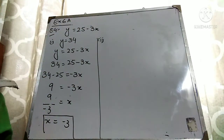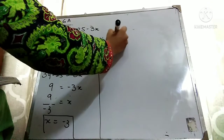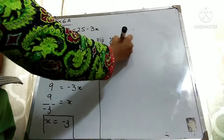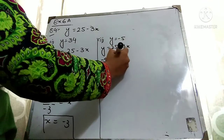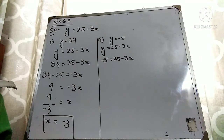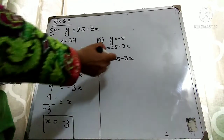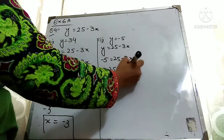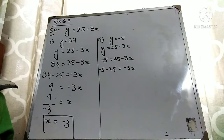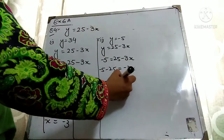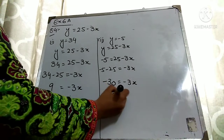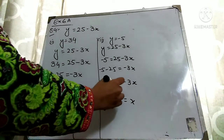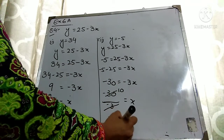Part 2 is y equals minus 5. The equation is y equals 25 minus 3x. Put minus 5 in place of y, and keep 25 minus 3x as it is. Move 25 to the other side — it will subtract. Minus minus is plus, so we add 25 and 5 to get 30. The sign of the bigger number is minus, so we have minus 30 equals minus 3x. Minus 3 divides to the other side — minus and minus cancel. 30 divided by 3 is 10, so the value of x is 10.